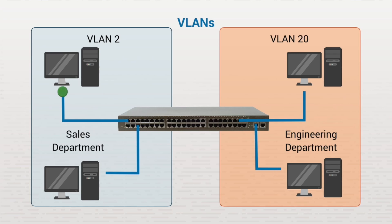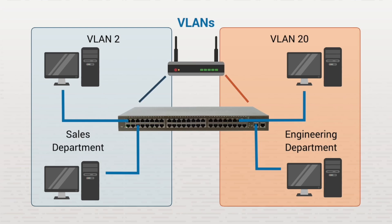Now, if a host in the sales department tries to send a packet to an IP address on the engineering subnet, it won't work because communication between VLANs can only happen on Layer 3. To get around this limitation, you could add a router to one of the switch's ports and configure it to route data between the subnets. Or you could use a Layer 3 switch, which provides both switching and routing functions, and then the routing would occur internally.